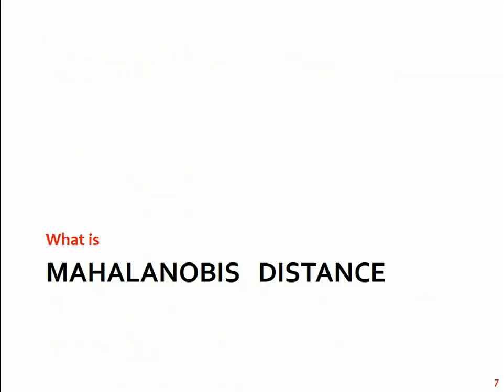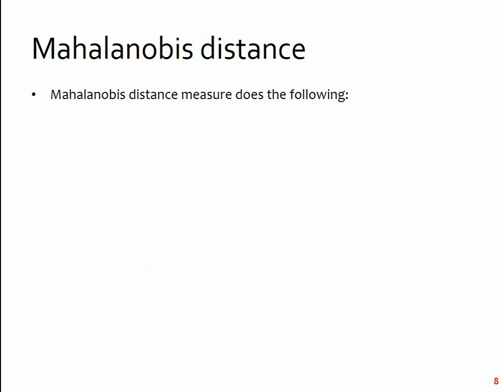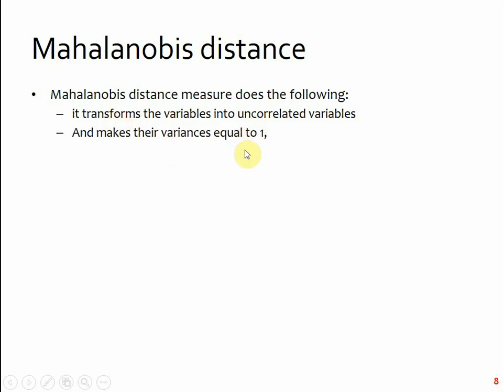So let me explain you what is Mahalanobis distance. How does it look like? It looks like the formula. It does three things. It transforms the variable into uncorrelated variables. It makes their variance equal to one. And then it tries to calculate simple Euclidean distance. So because it has made it uncorrelated, it gets rid of the variance and covariance of the data. It's the covariance of the variable. And because it has made the variances equal to one, it has standardized it.